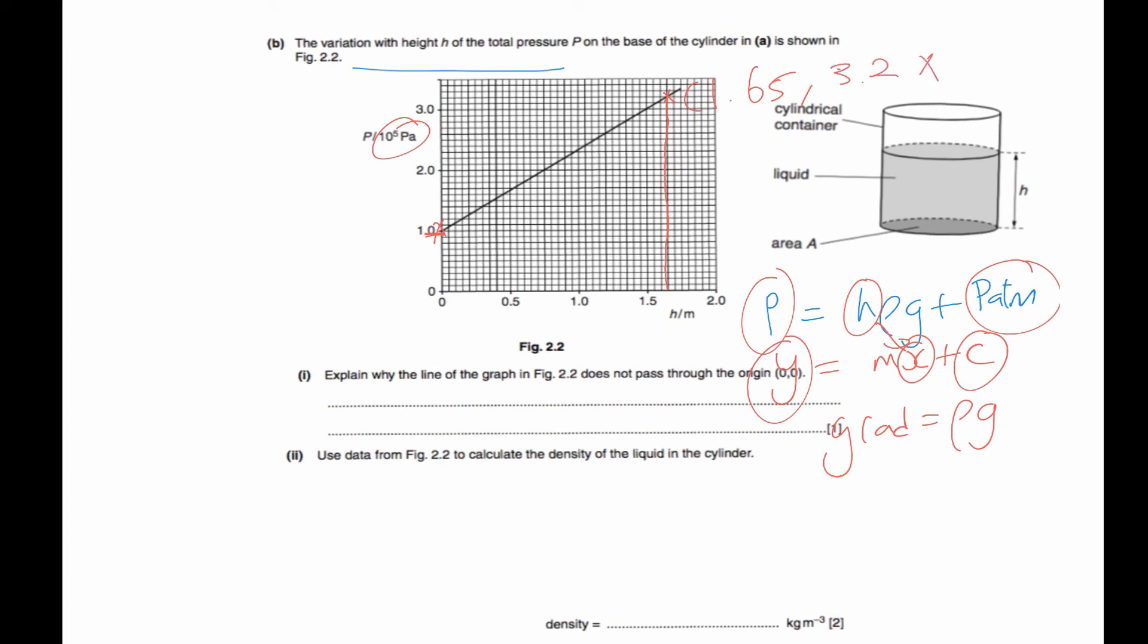Now let's substitute the values to find the density. So the gradient equals ρg, so the gradient here would be 3.2 times 10 to the power 5 minus 1 times 10 to the power of 5, over 1.65 minus 0. That equals ρ times 9.81. And solving for this would give you a value of density of 13,592. But if you want to write the answer in 2 significant figures, you'll be 14,000, or if you want to leave it in 3 significant figures, you'll be 13,600 kilograms per meter cubed.